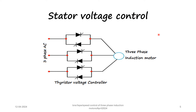Stator voltage control is a method by which the speed of a three phase induction motor can be changed. In this method the supply available to the stator is changed using a thyristor voltage controller, which consists of three pairs of thyristors. Two thyristors are connected back to back and each pair is connected to a phase. The supply voltage is changed by changing the firing angle of the thyristors. The torque developed is proportional to the square of the supply voltage, and hence the motor speed changes — but there is no change in the synchronous speed.